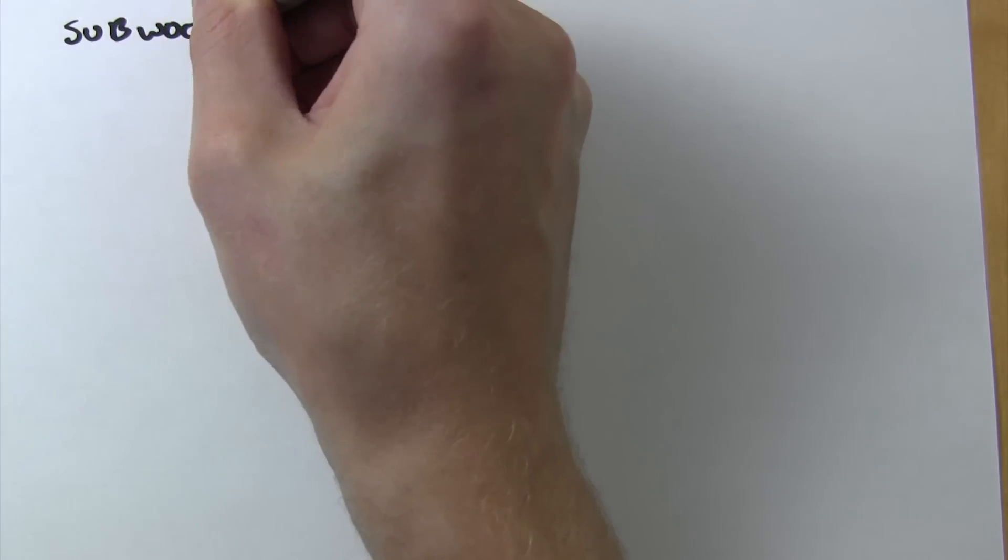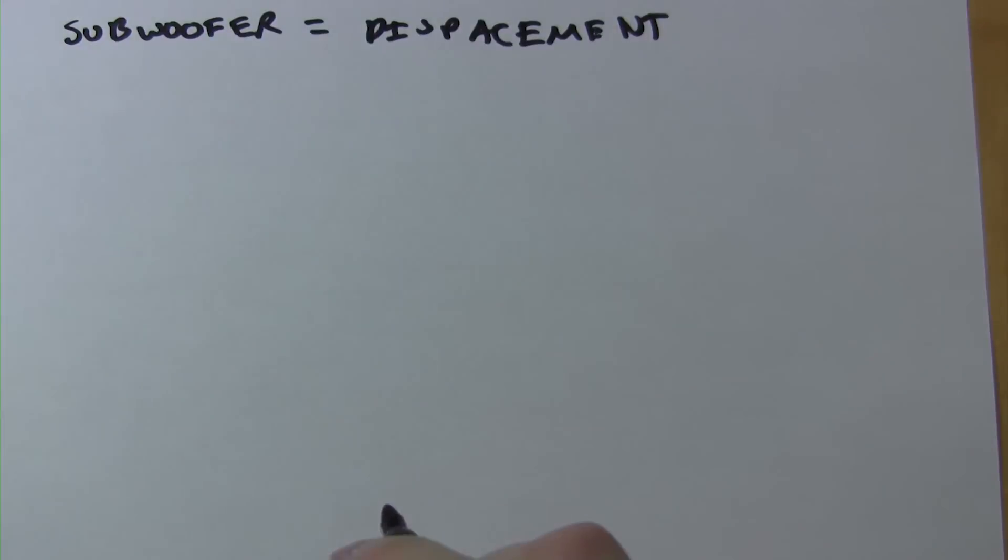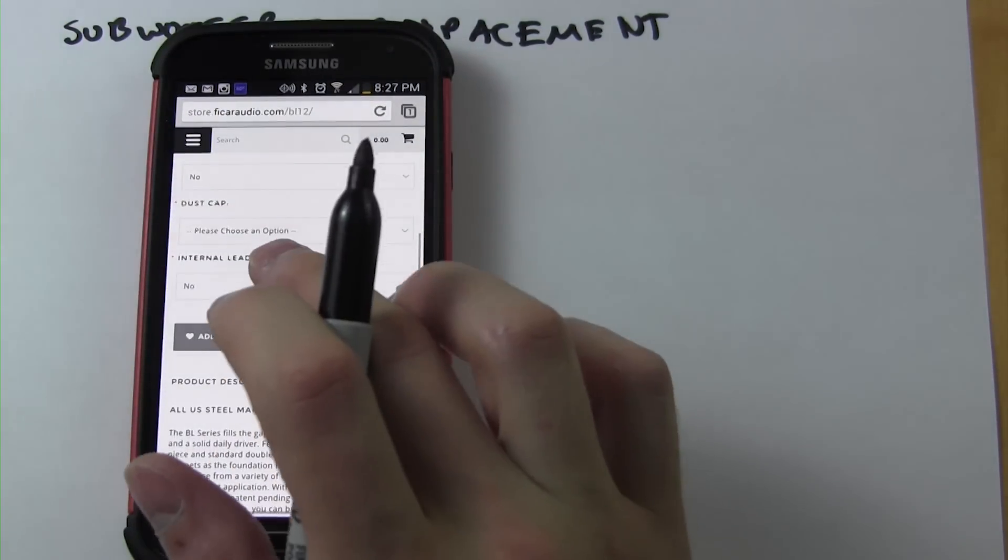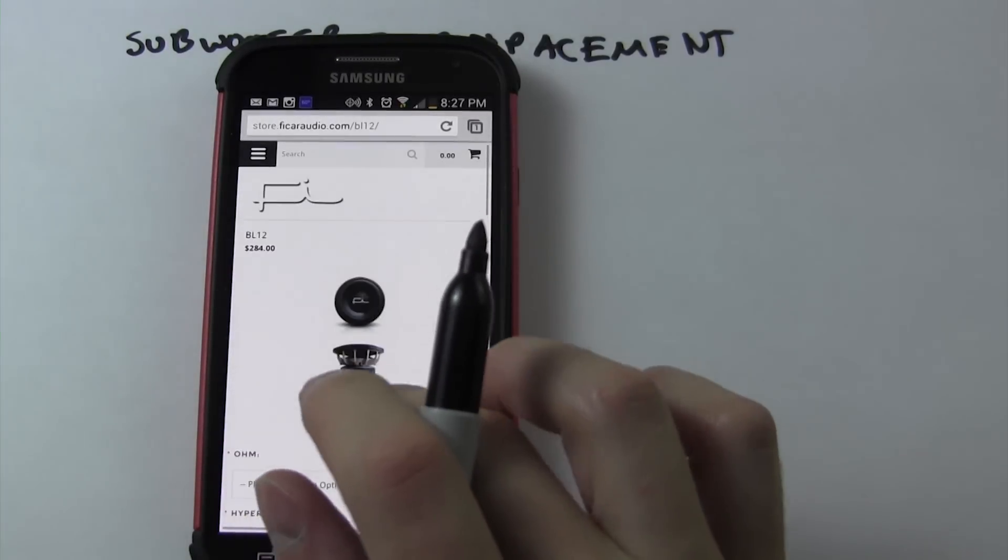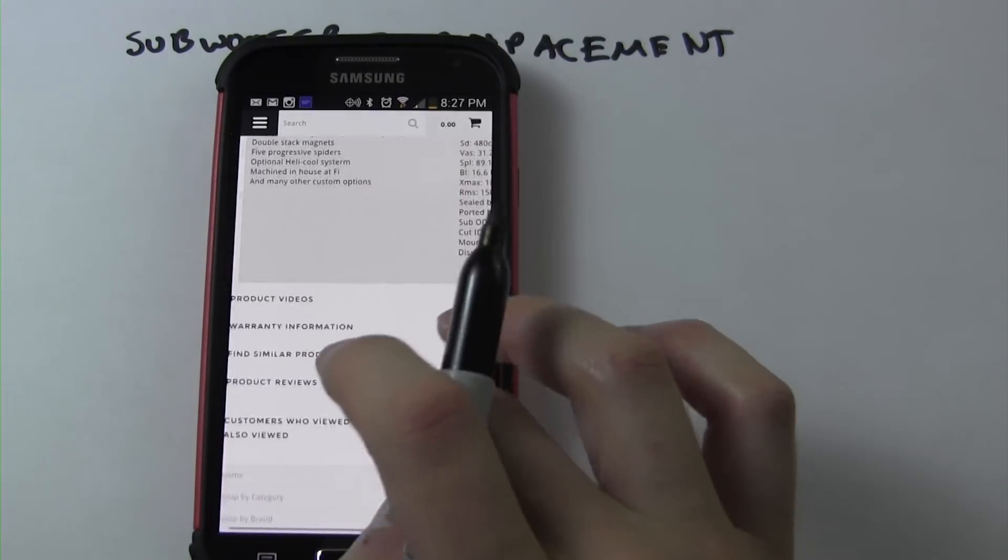Let's start with taking a look at our subwoofer displacement. Subwoofer displacement is the volume that the actual subwoofer itself takes up within the enclosure. This is a spec that can be found on the manufacturer's website.